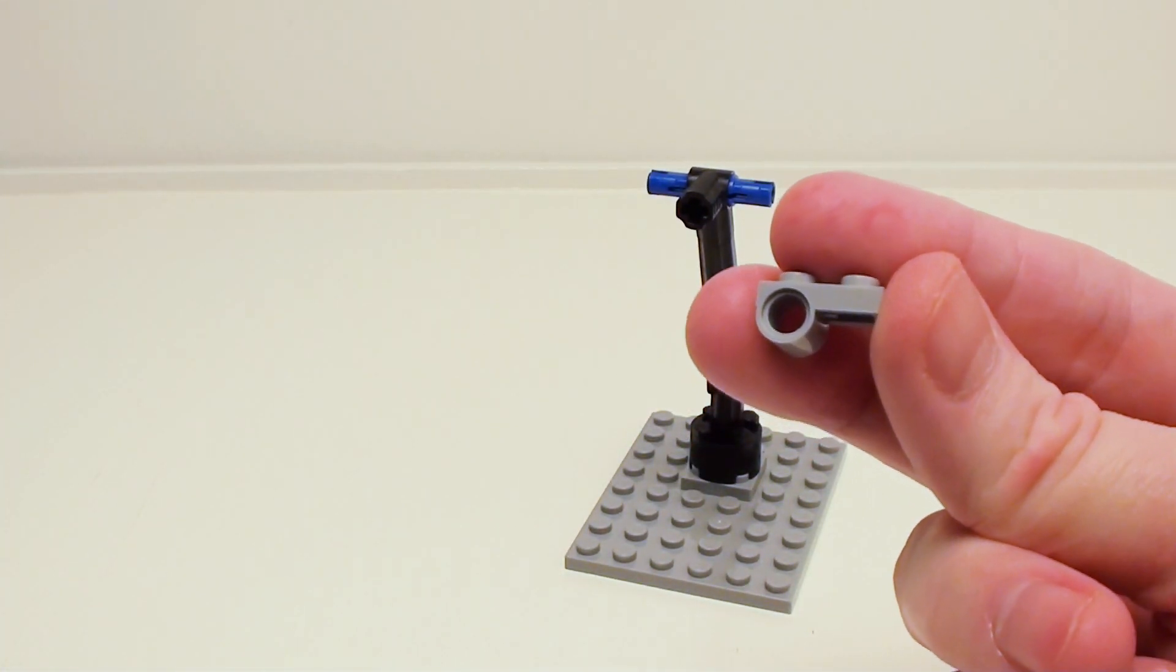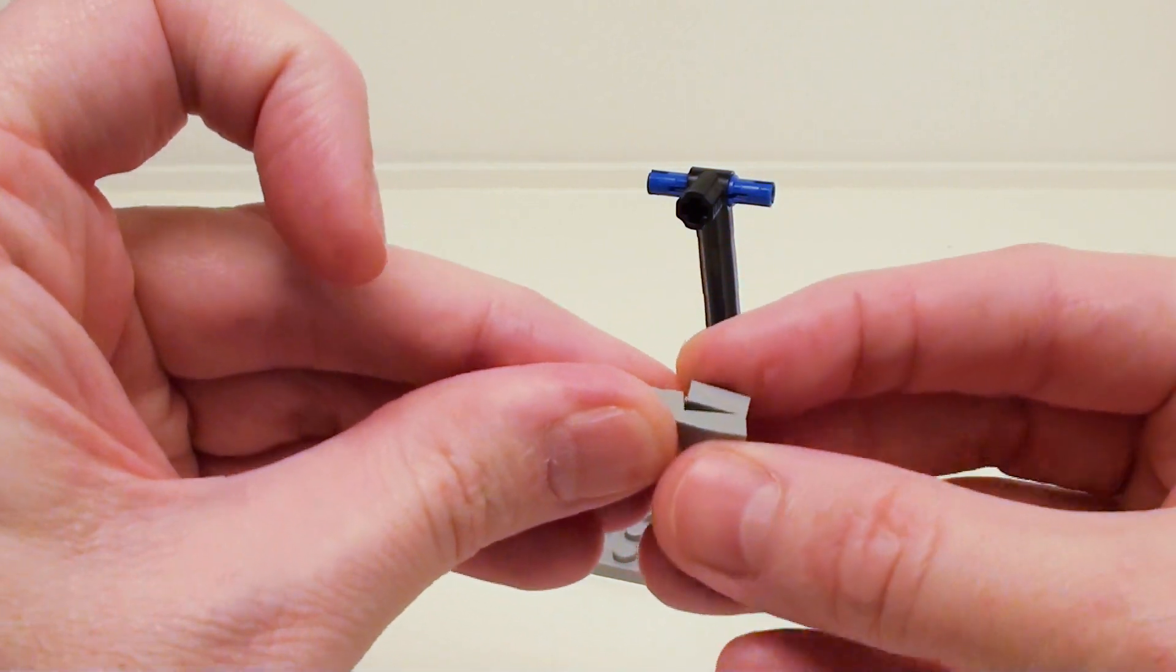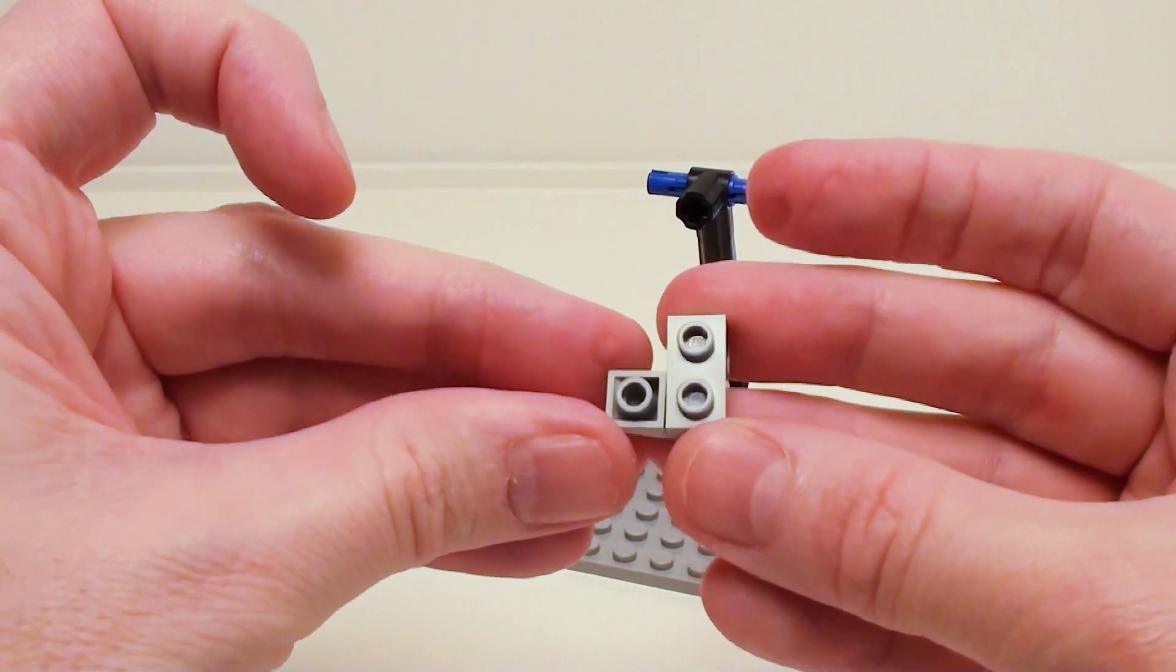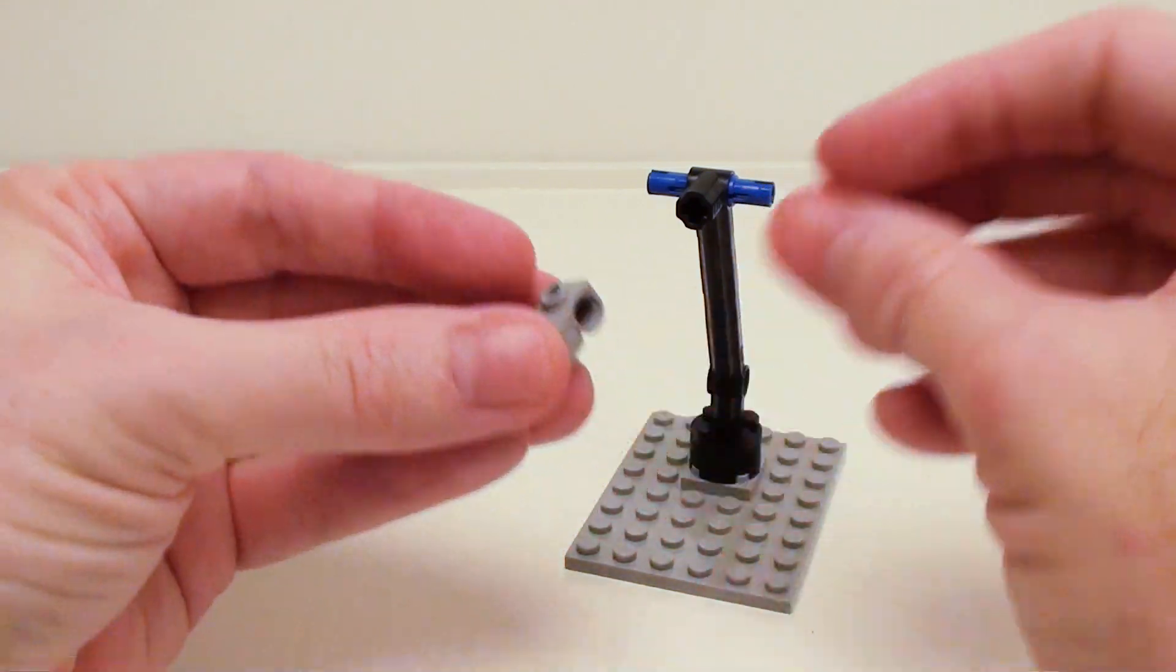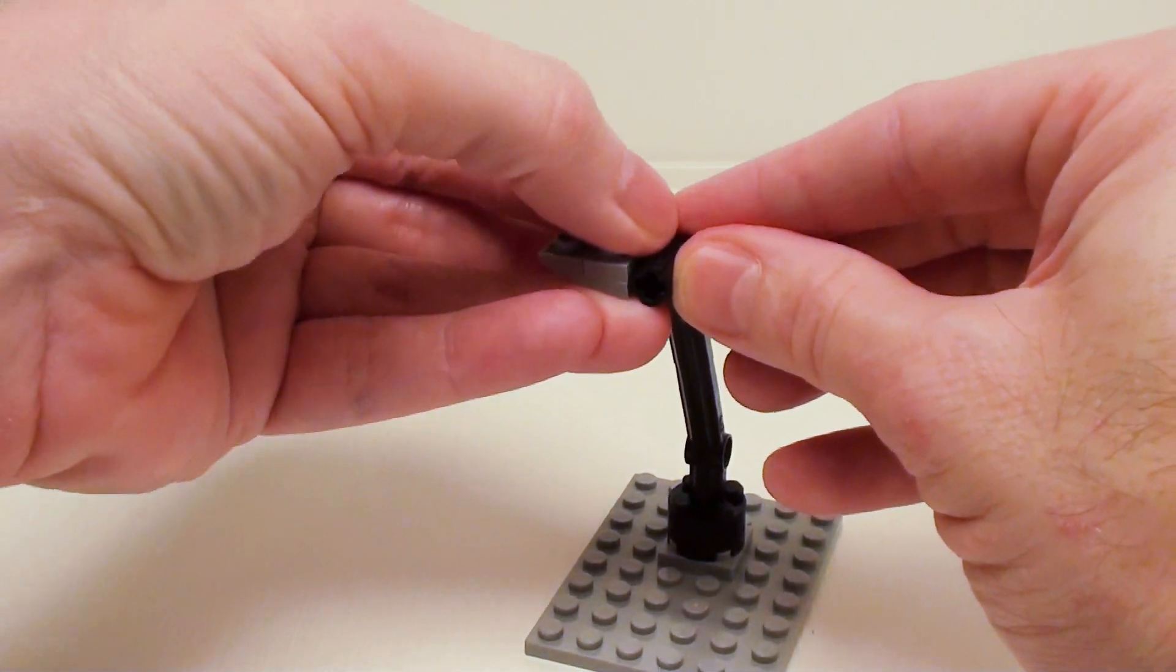Take a 1 by 2 modified plate with Technic pin connector and an inverted 1 by 2 plate with bow. Place it as shown. We're going to place this one on the left-hand side of the bracket assembly.